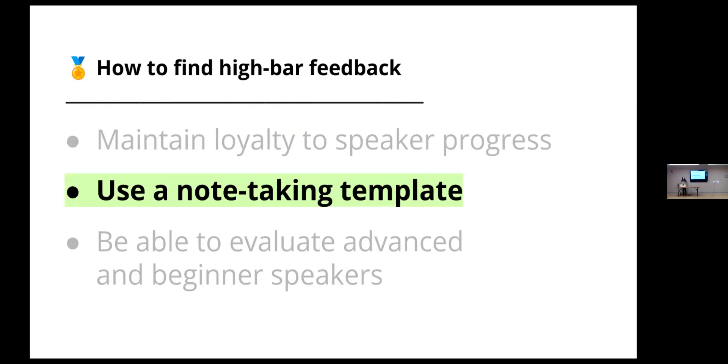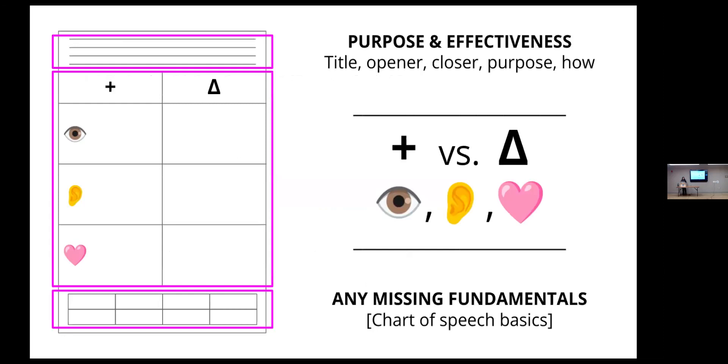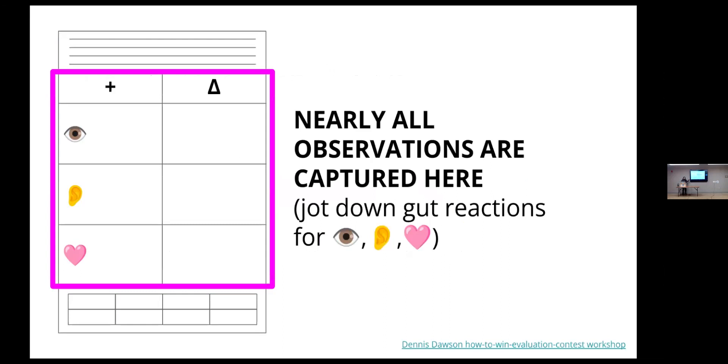The next step in being a high bar evaluator is using a note-taking template. I wish I could catch details and unique observations off the cuff, but a thorough template is actually what helps me do that. Currently, my template has three sections. There is the top section for capturing purpose and effectiveness, middle section of positives and areas of improvement, and the last section capturing any missing fundamentals. Nearly all the observations are captured in the middle section, which is simply one side for positives, things done well, and one side for deltas, the things needing improvement or change.